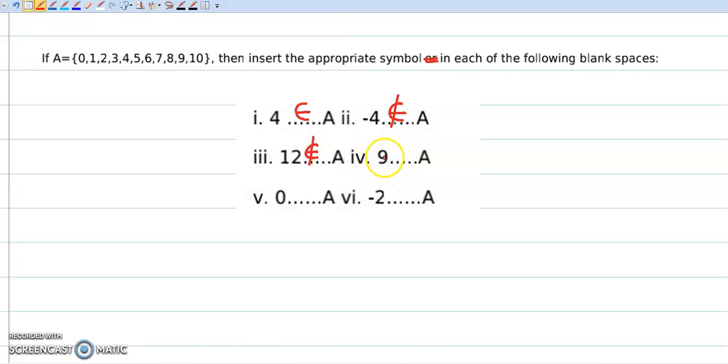Next the element 9. Yes, we can clearly see the element 9 is an element of set A. So therefore we say 9 belongs to set A. Next is 0.